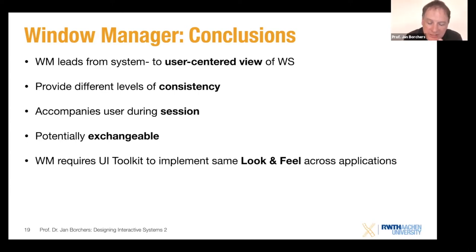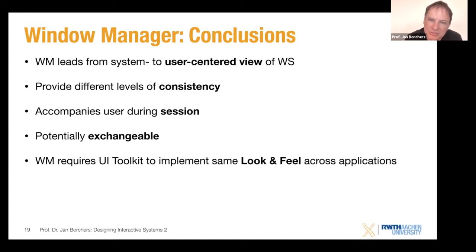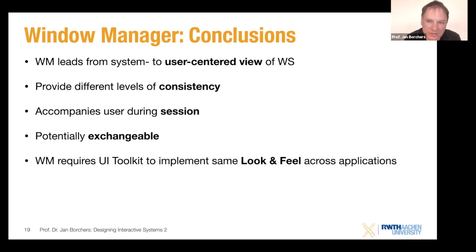However, even if you write a window manager with a wonderful consistent style — like the Windows-style close, minimize, maximize buttons in the top-right corner of each window — this still doesn't mean you have consistency with how applications look inside the window. The window manager does not define user interface components like buttons, menus, or scroll bars inside the window. For that we still need something else: the user interface toolkit, on the next level up, which provides look-and-feel consistency across applications for anything going on inside the top-level window.